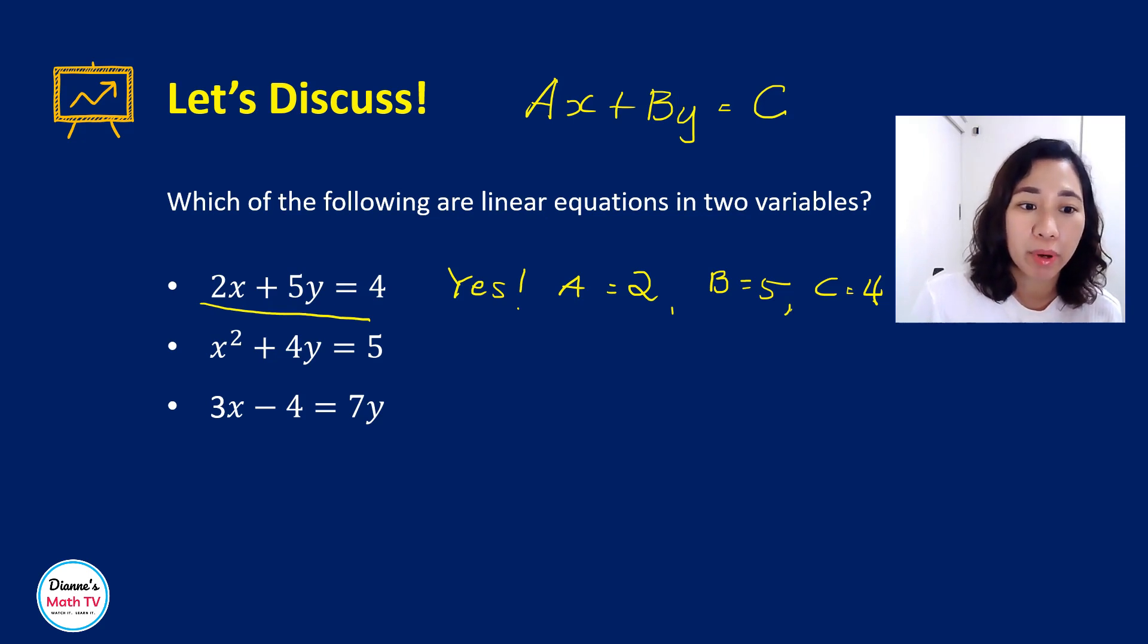Now, what about for the next example? x squared plus 4y is equal to 5. Is that a linear equation? The answer is no. Why is that? Because you have an exponent of 2 for x. And remember that the exponents for x and y should only be equal to 1. Okay? So the reason is that the exponent of x here is 2.